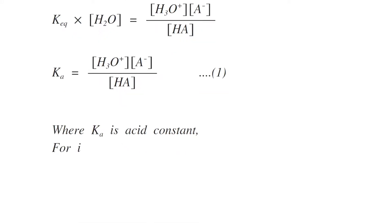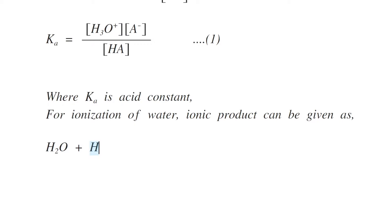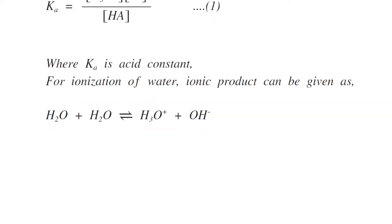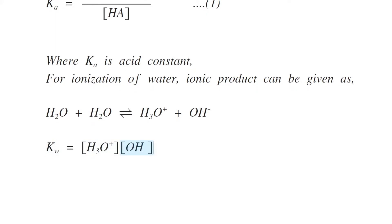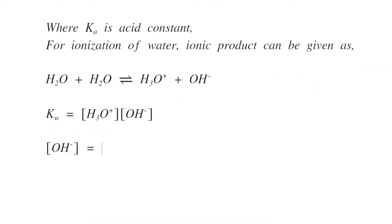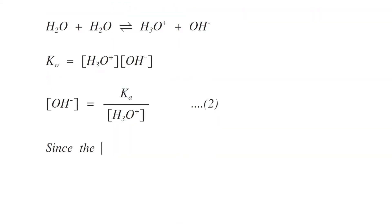For the ionization reaction of water, H₂O + H₂O gives H₃O⁺ plus OH⁻. The ionic product of water Kw can be written as [H₃O⁺][OH⁻]. Rearranging, we get [OH⁻] = Kw / [H₃O⁺]. This is equation number two.